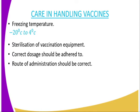When handling a vaccine, the first consideration is to provide a freezing temperature between negative 20 degrees Celsius and 4 degrees Celsius, because vaccines are required to be kept under very low temperature. Number two is sterilization of vaccination equipment — equipment used during vaccination must be sterilized, either by boiling with boiling water.